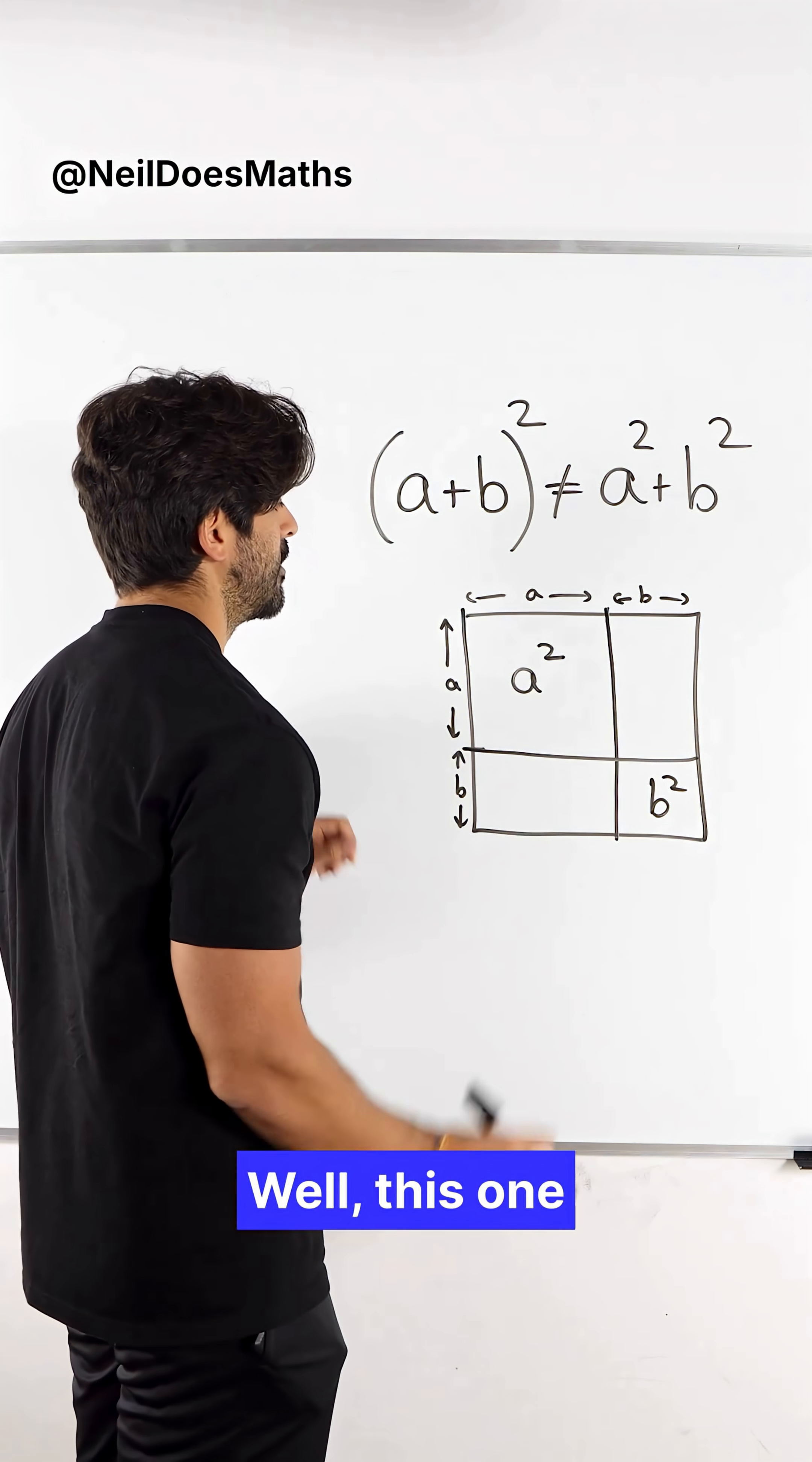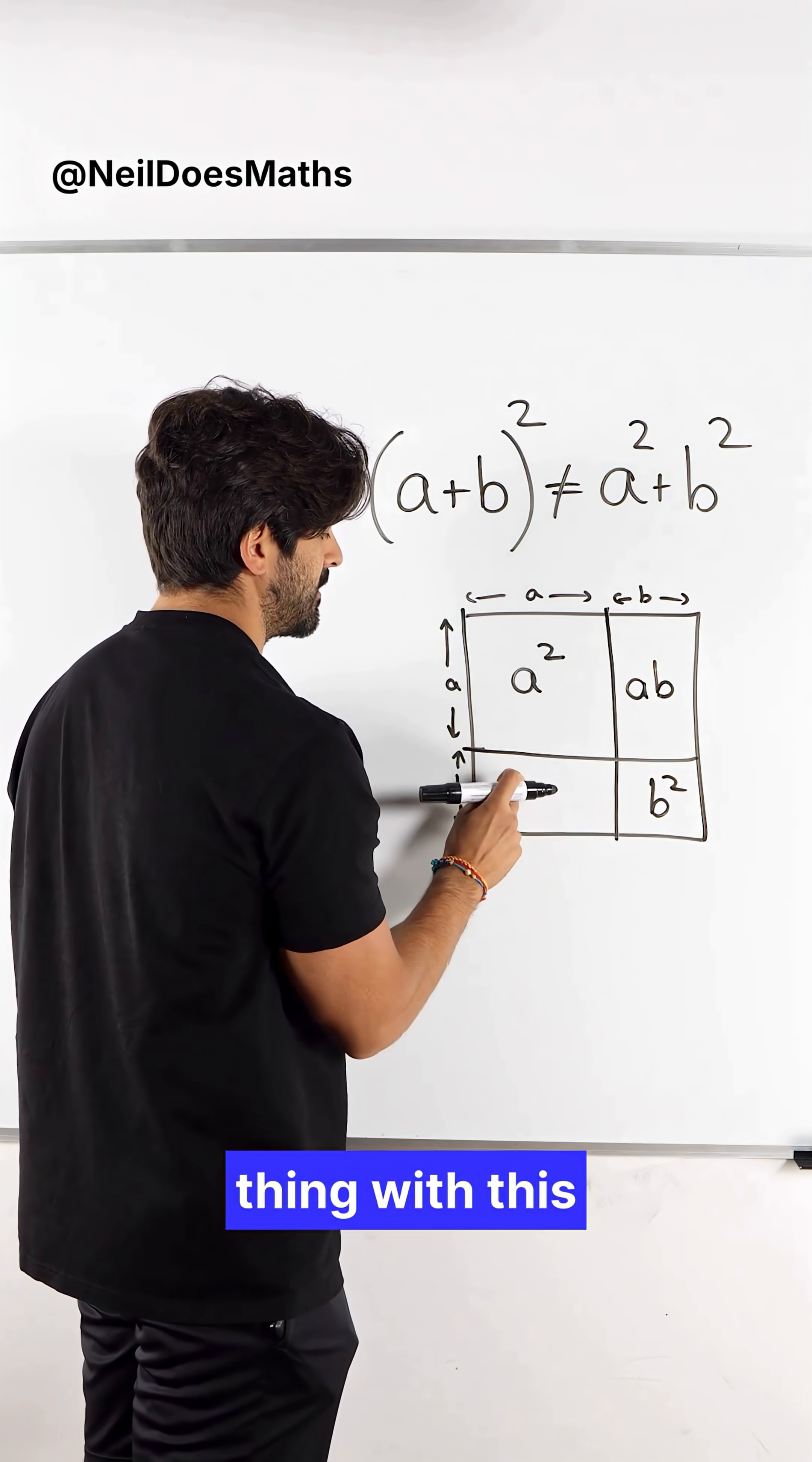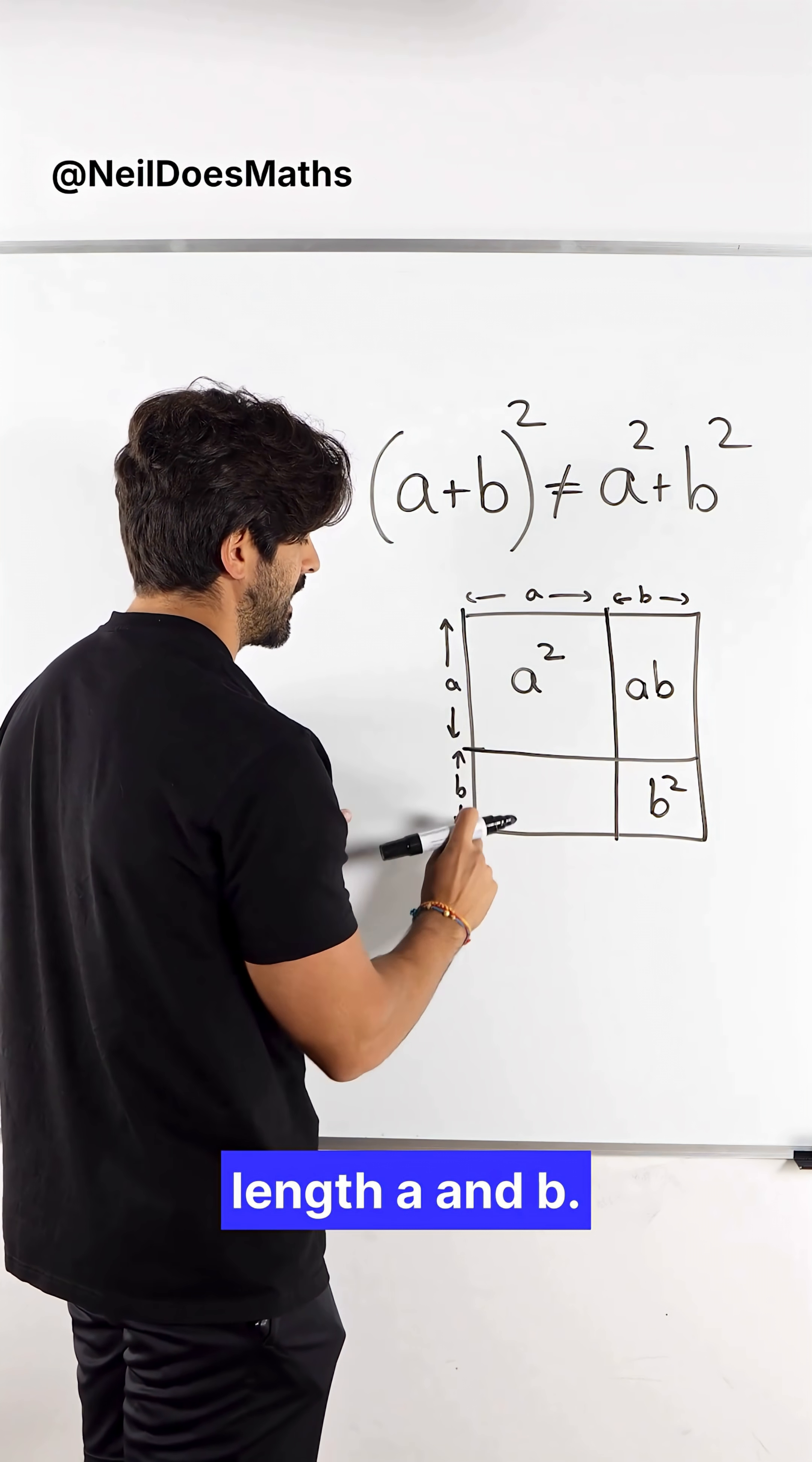Now what are the area of those? Well this one has a side length of a times b, which is ab, and same thing with this one, side length a and b.